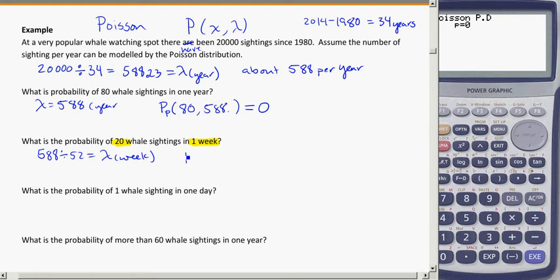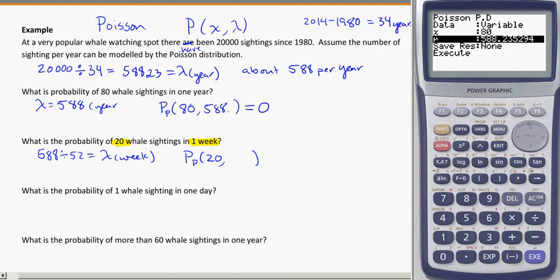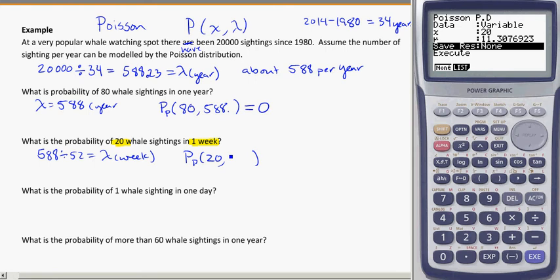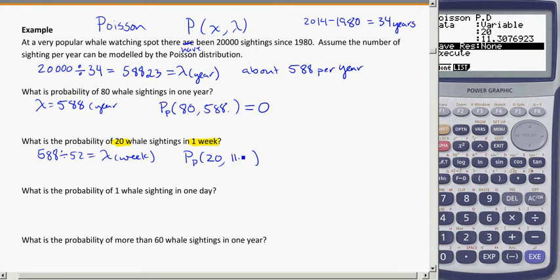So, if I want to find out the probability, precisely, of exactly 20 whale sightings in one week, that's the number I'm going to put in there, the 588 divided by 52. So, let's try that out. 20 sightings, 588 divided by 52. That's roughly 11.3. And here I get a really small number, but not too small.